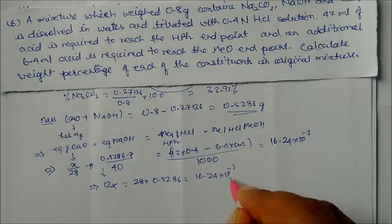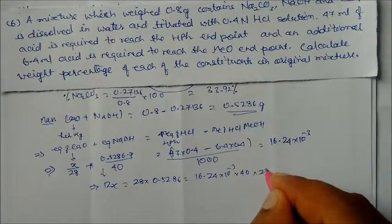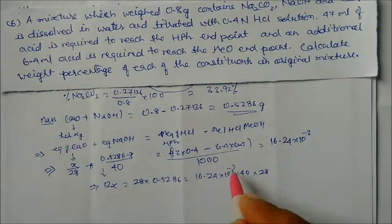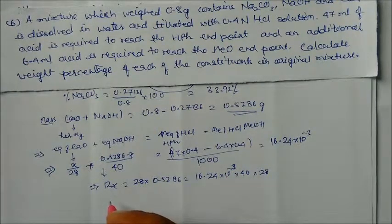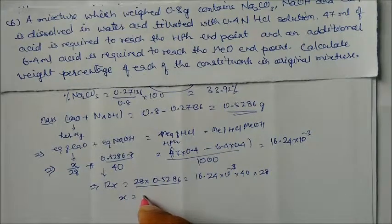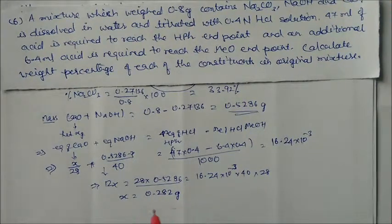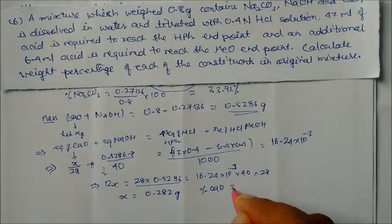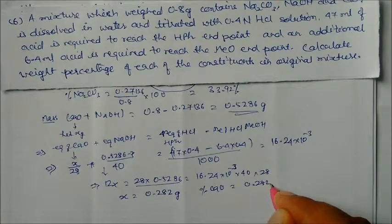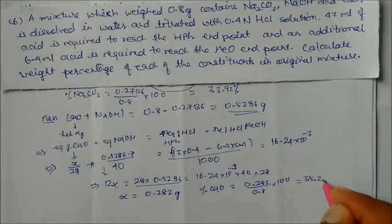Solving this equation: 40x + 28(0.5286 − x) = 28 × 40 × 16.24 × 10⁻³. Simplifying gives 12x = 28 × 40 × 16.24 × 10⁻³ − 28 × 0.5286, and we get x = 0.282 grams. This is the mass of calcium oxide.